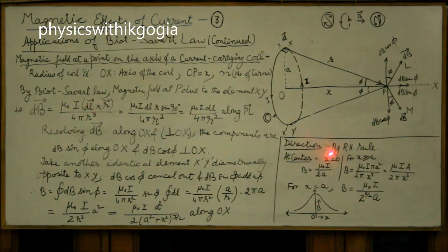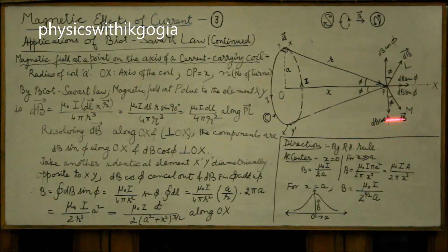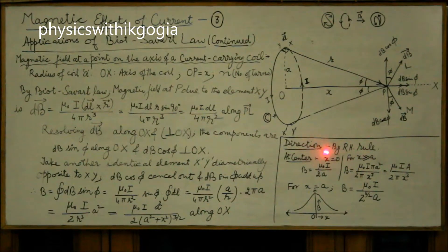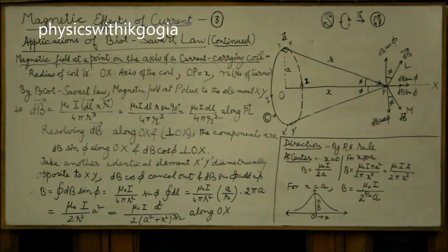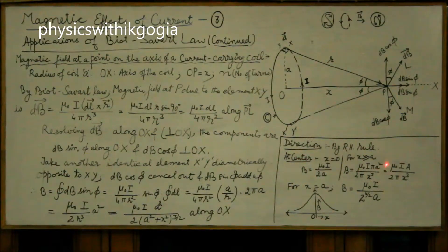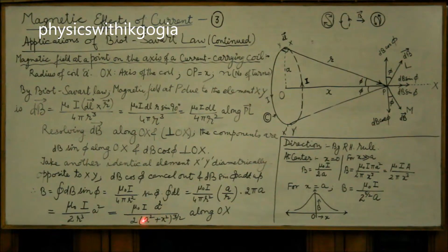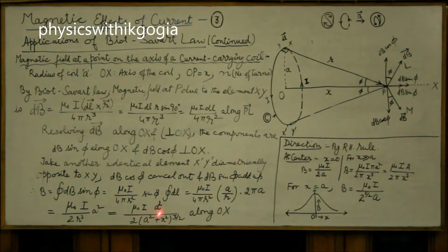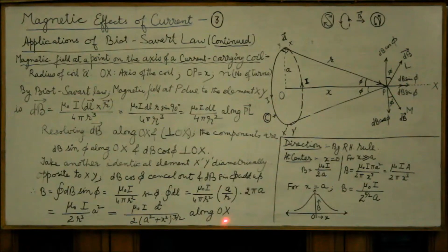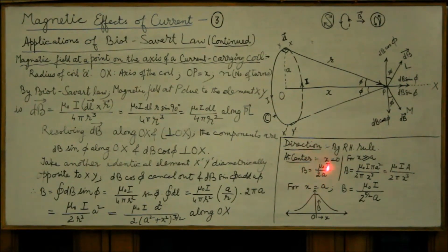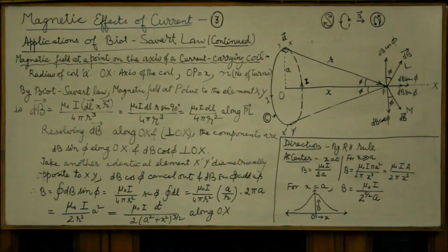Now the direction is clearly along the axis, this is by right hand rule applied to the cross product here. At center x will be 0, so put x equal to 0, denominator will be a³, a² will cancel out with a³ leading you to this expression μ₀ i over 2a which you have already derived.